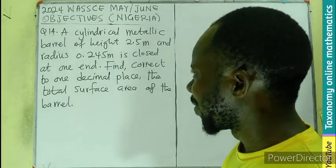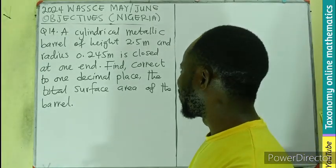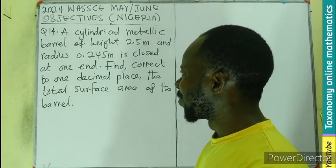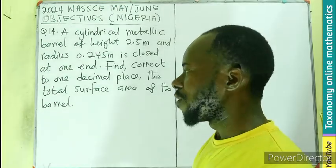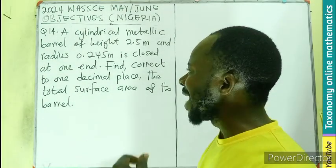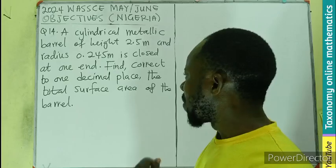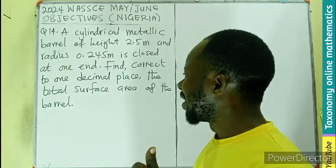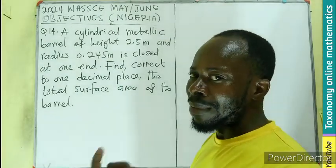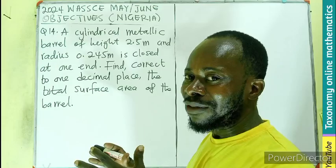A cylindrical metallic barrel of height 2.5 meters and radius of 0.245 meters is closed at one end. We are to find, correct to one decimal place, the total surface area of the barrel.